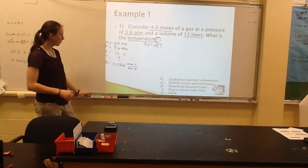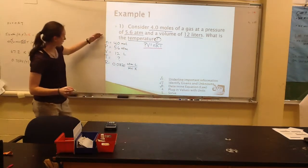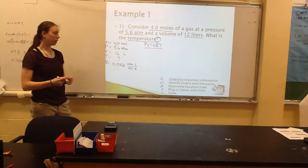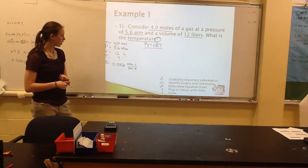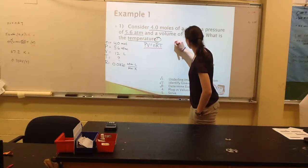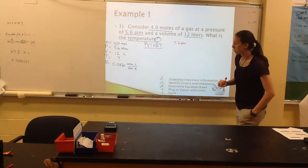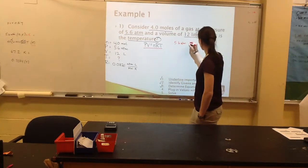All right, so now that I've got my equation, my PV equals nRT, I've got each of my variables, I'm going to plug in with units. So my pressure, we'll start off, 5.6 atm. My volume is 12 liters.